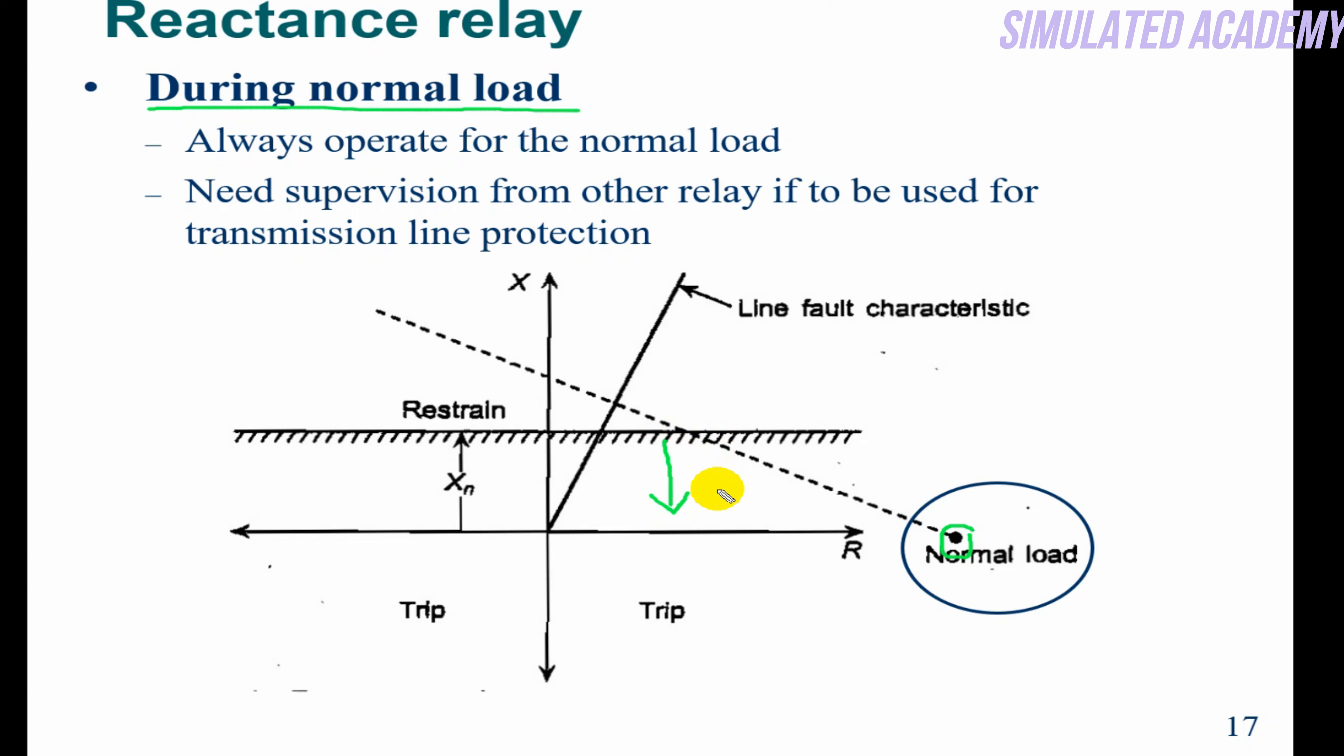So it lies below this threshold line. For normal load it's operating when it should not. So it cannot be used for transmission lines that operate under normal load. It can be used as a supervision relay for